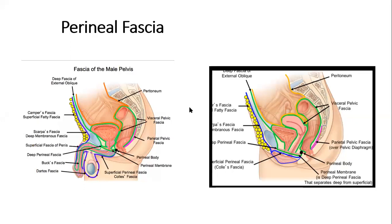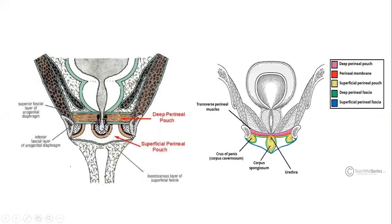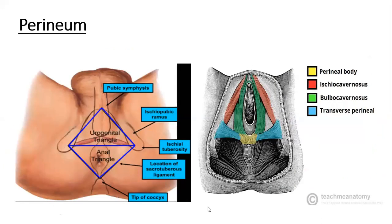The ischioanal fat pad is located on both sides of the anal aperture. When the anal opening is present, laterally on both sides is the ischioanal fossa, which is a space containing fat.